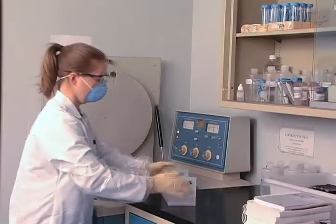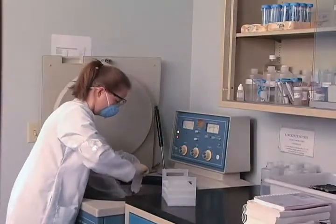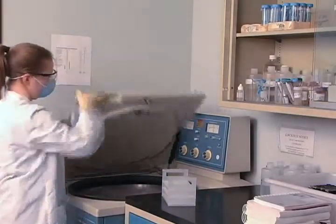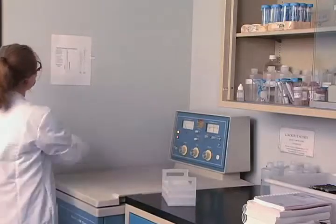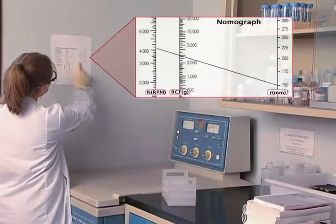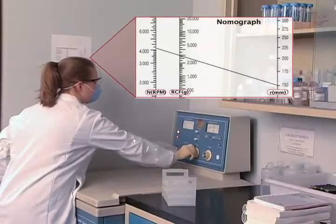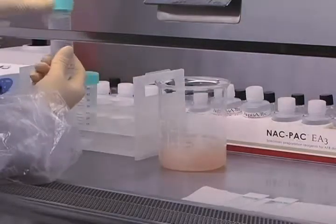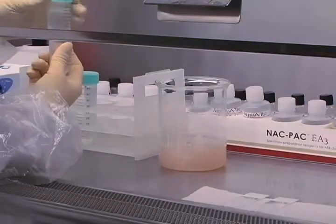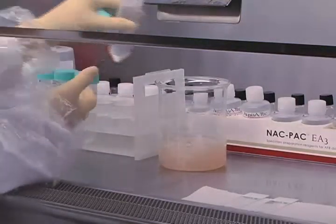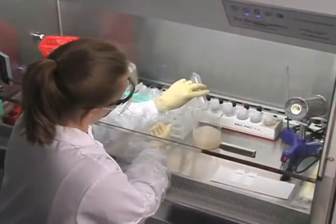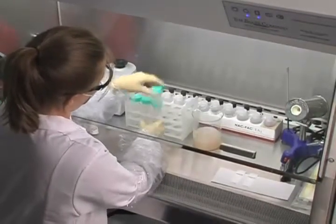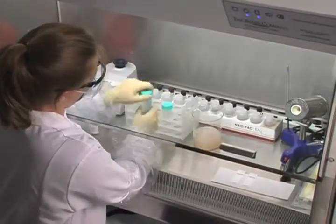Centrifuge the specimen tubes at 3,000 XG for at least 15 minutes. Note that 3,000 XG is not typically equivalent to 3,000 RPM — you should use a nomograph or refer to the centrifuge owner's manual to determine what RPM is required to reach 3,000 XG. After centrifugation, return the samples to the biosafety hood and carefully decant all of the supernatant into a splash-proof container holding a proper disinfectant. Be sure to decant dry, as residual supernatant can negatively affect the sample pH.